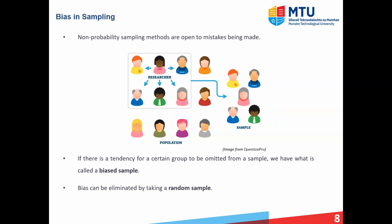Those were three examples of non-probability sampling methods, but they are open to mistakes because not all individuals in your population have an equal chance of being included, meaning the sample may not be representative of your population. In statistics, a tendency for a certain group to be excluded from the sample is called bias. The way we can eliminate bias is by using random sampling.